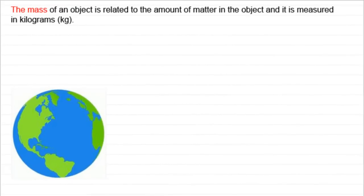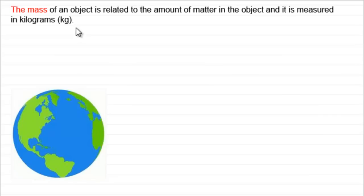Welcome to this tutorial on mass and weight. These are two quantities that often get confused with one another. The mass of an object is related to the amount of matter in the object and it is measured in kilograms. Although sometimes you might see units of grams or some other units, you must try and change them back to kilograms.